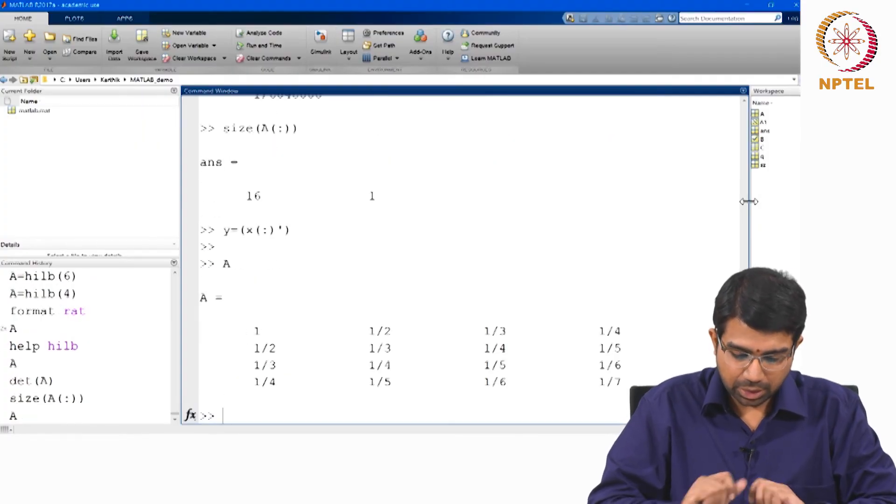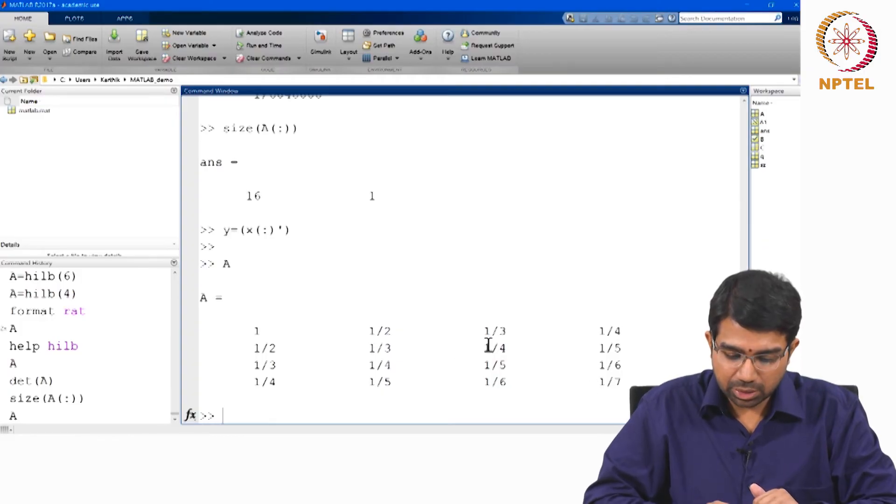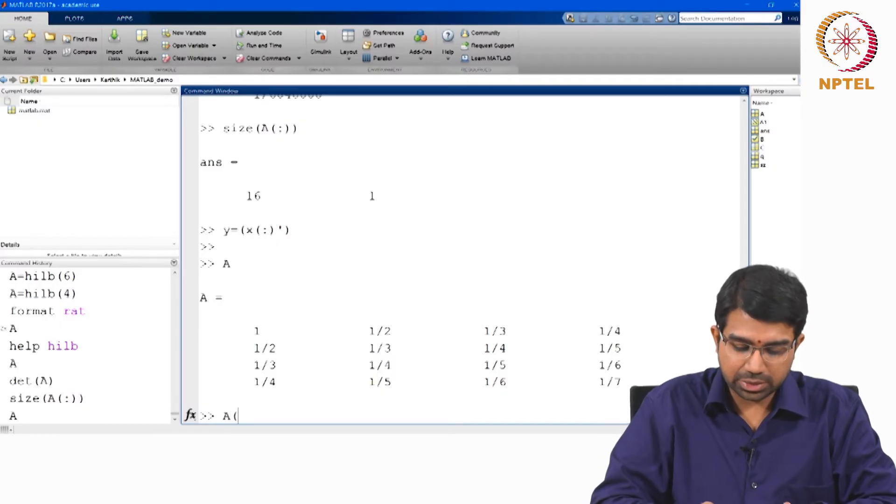Okay. So size of A colon and yeah, so now can you index only this part of the matrix? Can you index the second row, how would you index the second row?